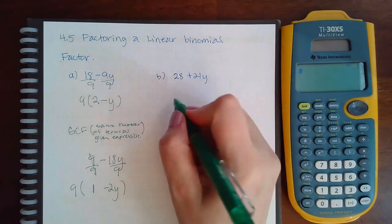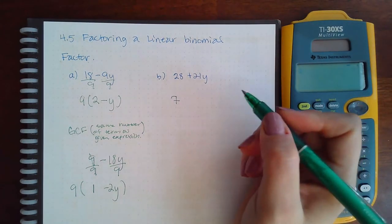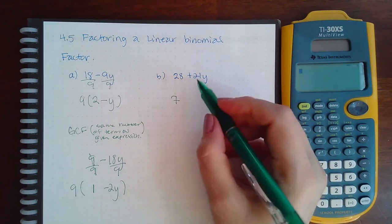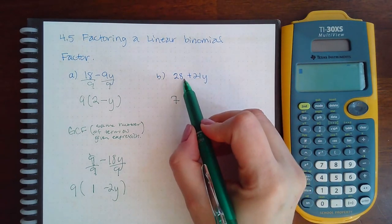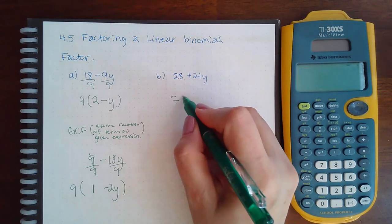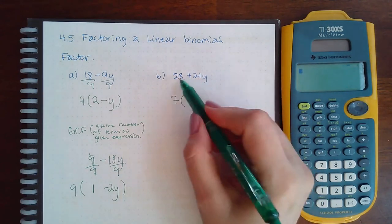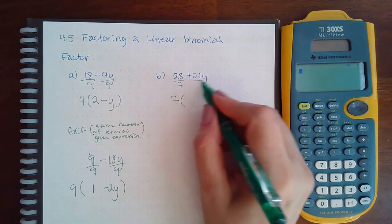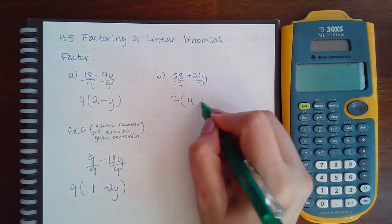So here I notice that the GCF is 7. 7 is the largest number that goes into 28 and 21. This doesn't have any variables, so I don't need to worry about factoring out any variables. And then if I divide these both by 7, I end up with 4 plus 3y.